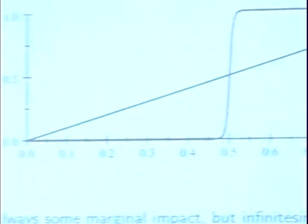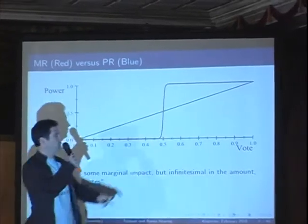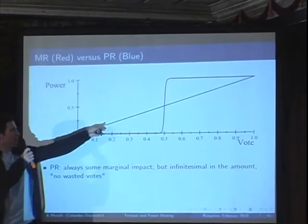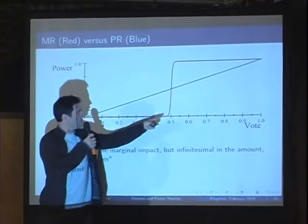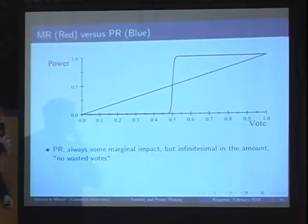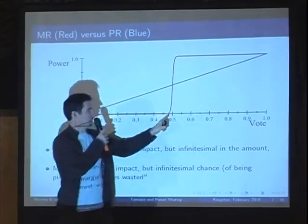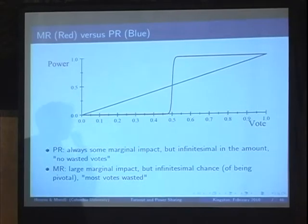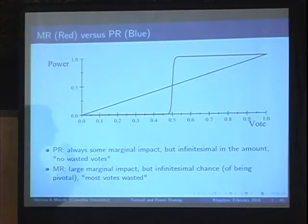From the rational voter point of view, these two different models have very different implications. If you are a voter and you know that power is going to be shared according to the blue line, your extra vote will contribute a little bit to increase the power of your party — always, with some tiny impact all the time. On the contrary, under majority rule, your extra vote will most of the time have no impact, but it will have immense impact with a very small probability — only when the election is very, very close. The question is quantitative: does a small impact all the time, or a very large impact almost never — which one is quantitatively larger? That's what determines the outcome.